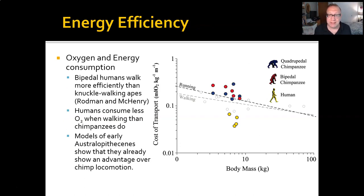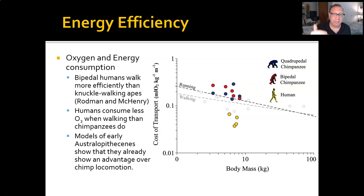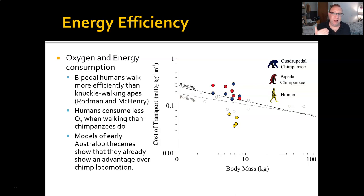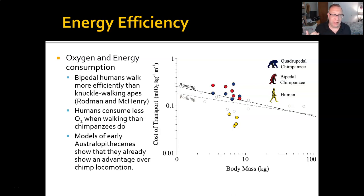I'll admit I'm a little biased — these are my favorite theories, and I kind of think they apply to every one of these. Modern bipeds like ourselves, who are fully adapted to walking bipedally, have a great advantage in terms of energy expenditure when we move, even compared to a chimp walking bipedally. We consume far less oxygen than a chimp does walking bipedally or quadrupedally.